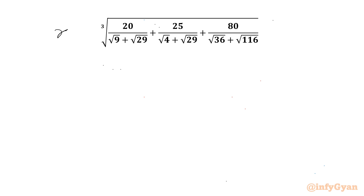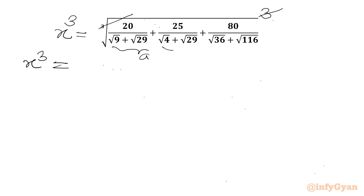I will assume this expression equal to x. Now I will consider cubing both sides. So the cube root will cancel with the cube. Now I can consider x³ equal to — let's say this is a, this rational expression b, and this rational expression c. So x³ equals a plus b plus c.